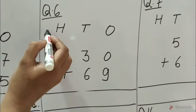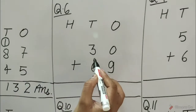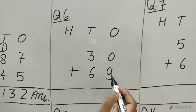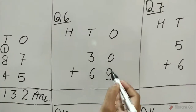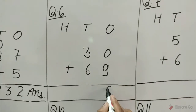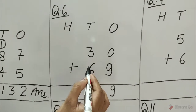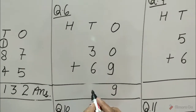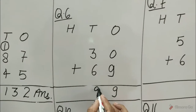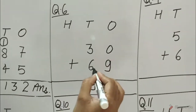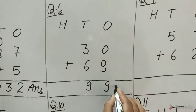Question number 6 is 30 plus 69. 9 plus 0 is equal to 9, and 3 plus 6 is equal to 9. 30 plus 69 is equal to 99.